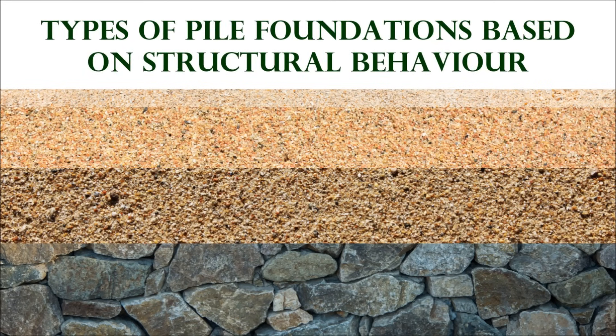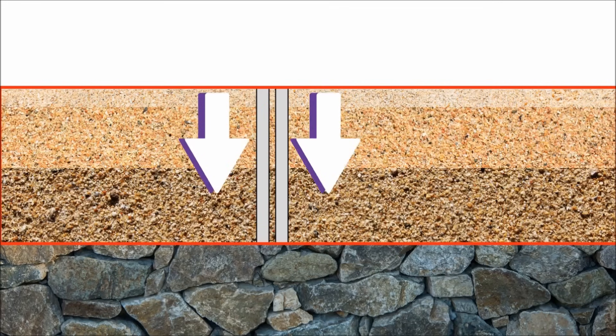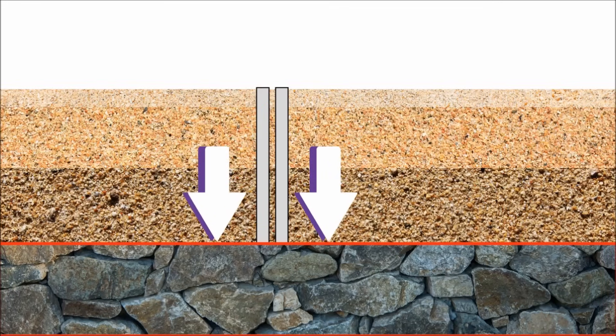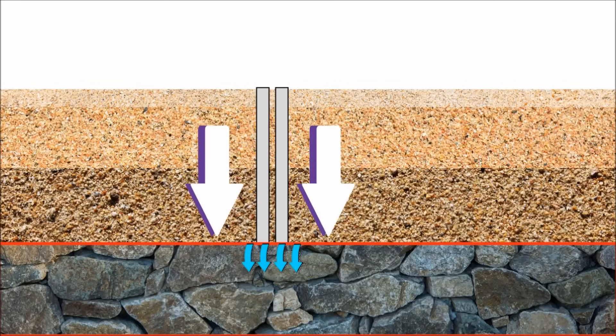Types of pile foundations based on structural behavior: End bearing piles. In end bearing piles, the load is transferred through weak soil to the strong soil. The bottom end of the pile rests on the layer of hard soil or rock.